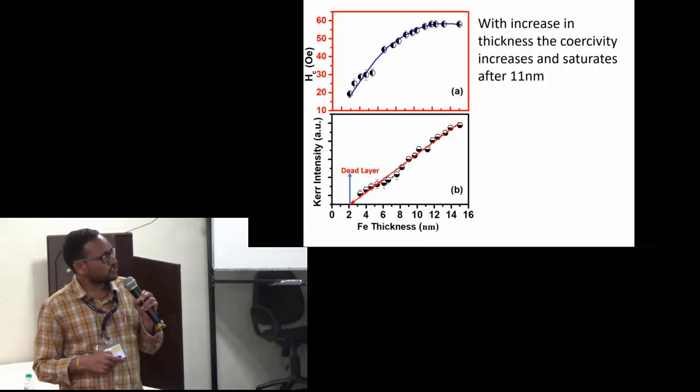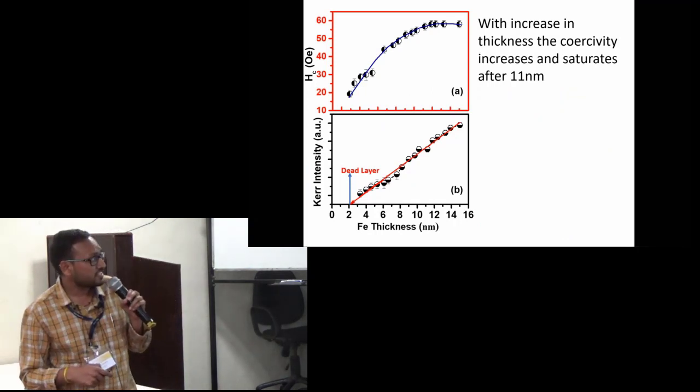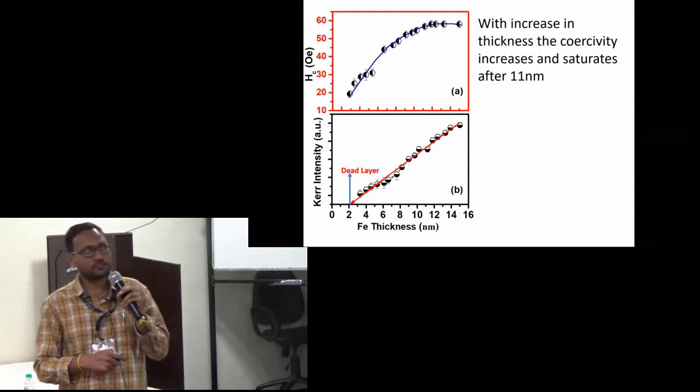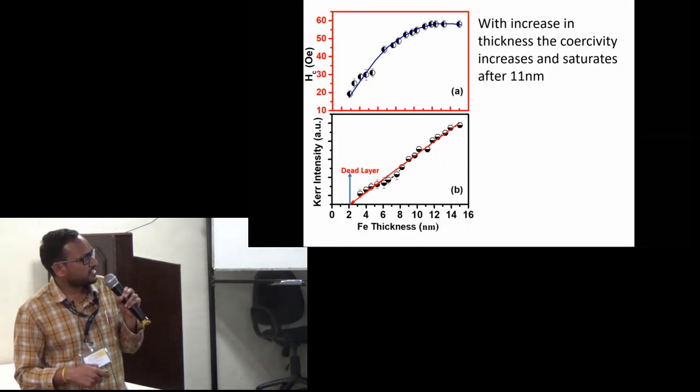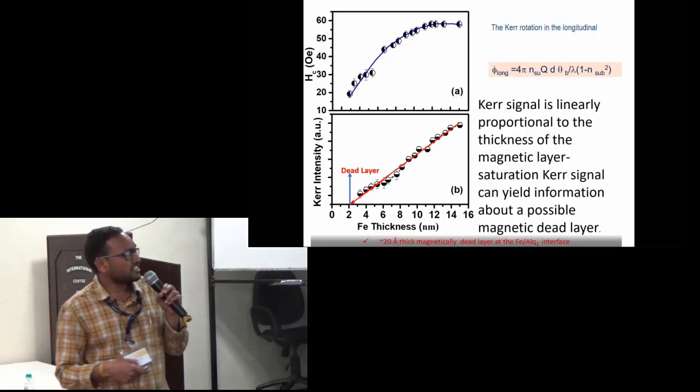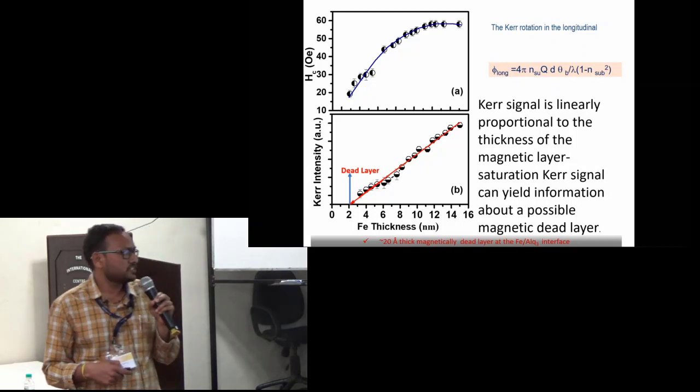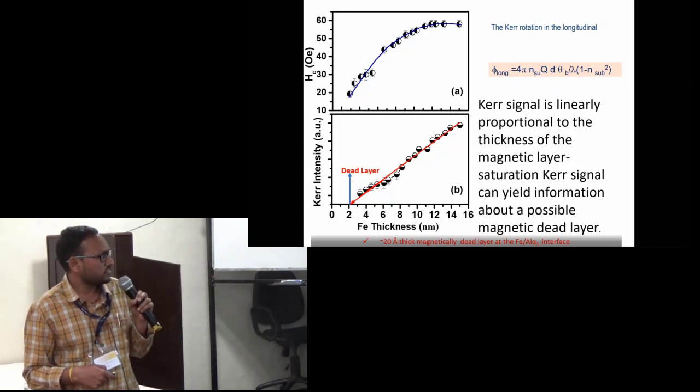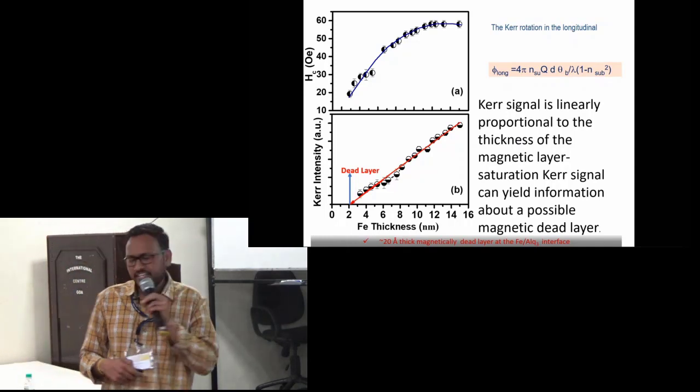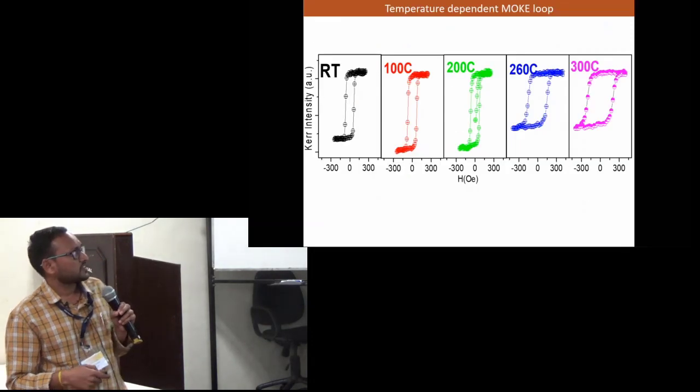This graph shows the coercivity variation with thickness and Kerr intensity with thickness. Here we get that the coercivity initially increases and then saturates after 11 nanometers. Whereas the Kerr intensity is linearly proportional to the thickness of magnetic layer, so it should pass through the origin, but here it cuts at 2 nanometers, that is 20 angstrom. This may be possible due to a magnetic dead layer at the interface of the polymer and metal.